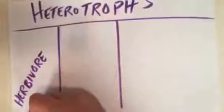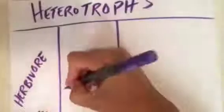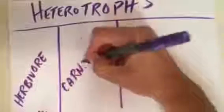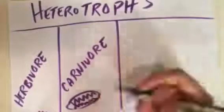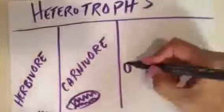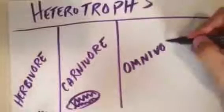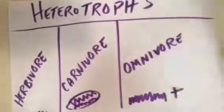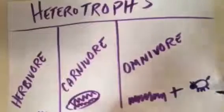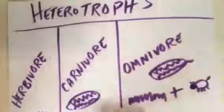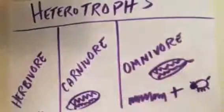Heterotrophs are organisms that get their energy from consuming other organisms — we are heterotrophs, or consumers. Heterotrophs can be classified into different categories by what types of organisms they consume: herbivores eat only plants, carnivores eat other heterotrophs, and omnivores eat both plants and animals.